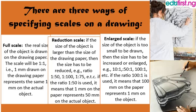The reduction scale is about reducing the size of the object on the drawing paper, and the scale could be 1:50, 1:100, or 1:75, depending on the size of the paper you are using. That is to say, one millimeter on the paper represents 50 millimeters on the actual object. You can use a graph for illustration — just as we plot graphs where one millimeter represents 50 millimeters.